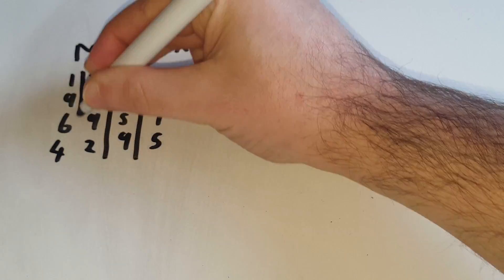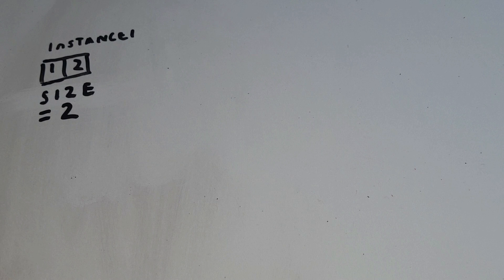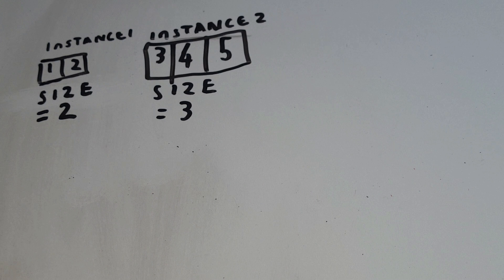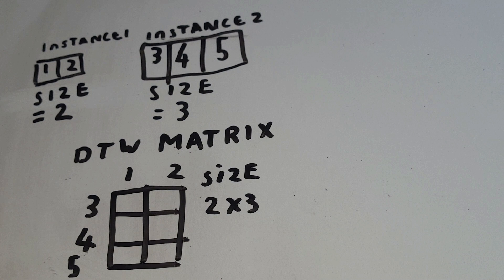Firstly, we create a matrix. If you don't know what a matrix is, for now think of it as a grid where each space in the grid has a number. We make the matrix big enough so that it's the size of instance 1 multiplied by the size of instance 2. So if the size of instance 1 is 2 and instance 2 is 3, then the grid will have 6 spaces like this, of 3 and 3.